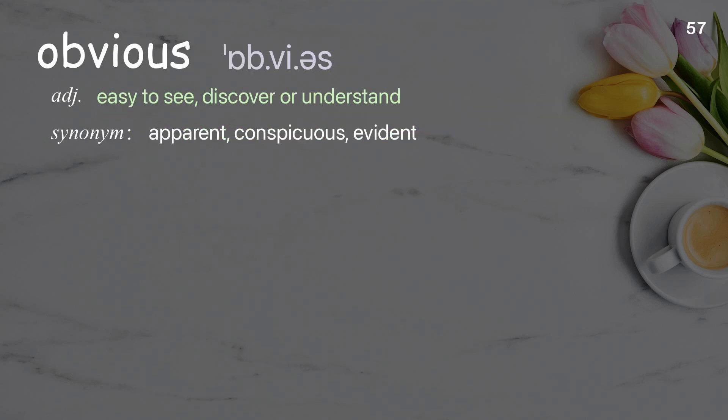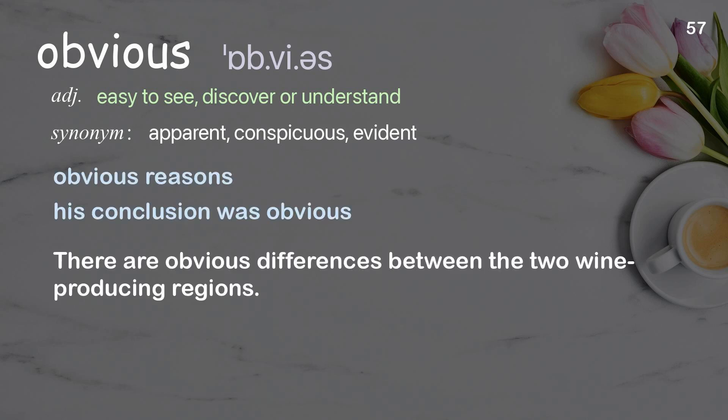Obvious: Easy to see, discover, or understand. Examples: Obvious reasons. His conclusion was obvious. There are obvious differences between the two wine-producing regions.